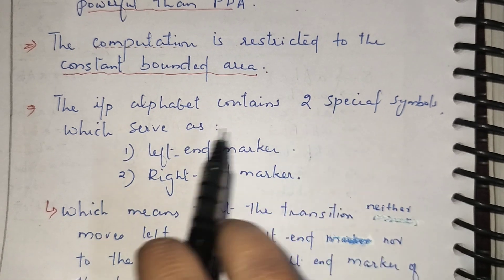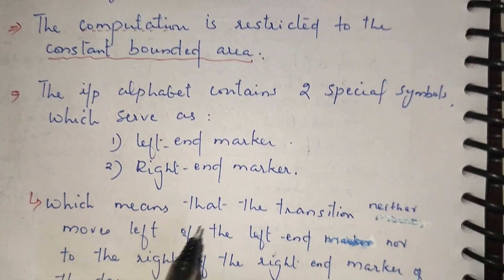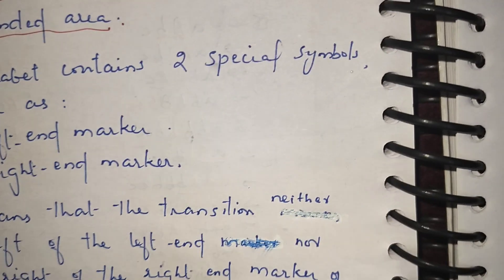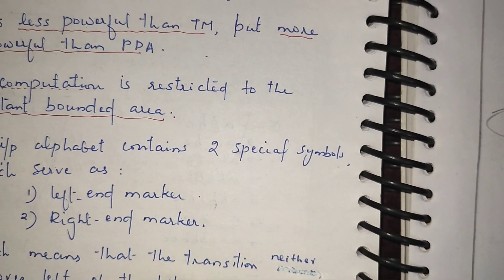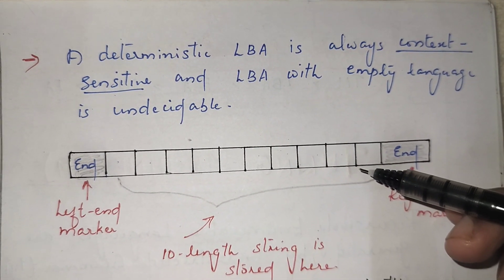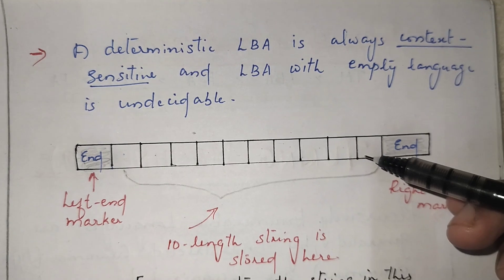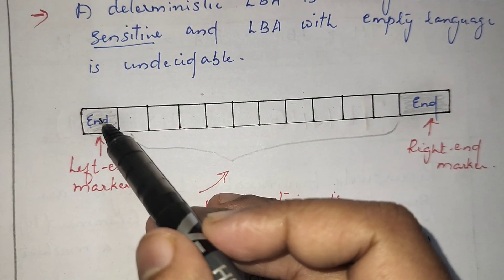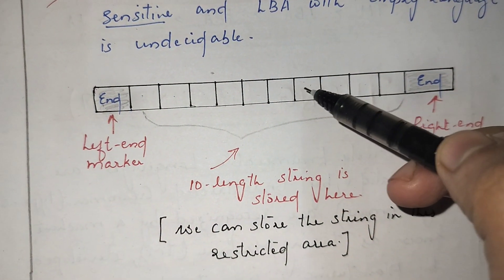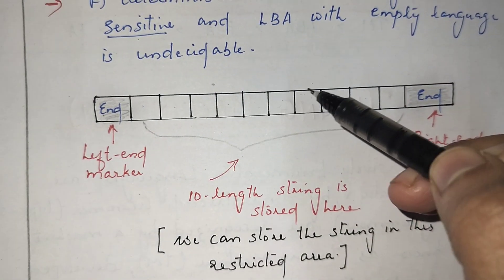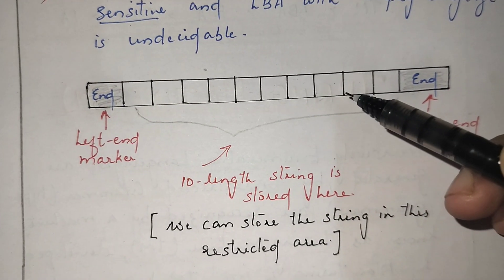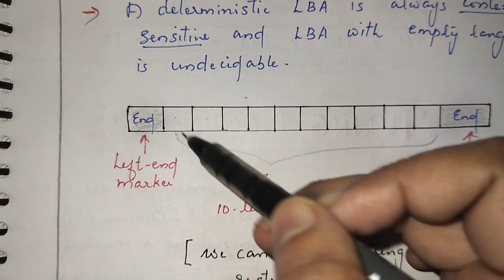The input alphabet contains two special symbols which serve as left and right end markers, meaning the transition can neither move left past the left end marker nor right past the right end marker on the tape. A deterministic linear bounded automata is always context sensitive, and linear bounded automata with empty languages is undecidable. Here in the tape, you can see 10 spaces — 10 locations — so a 10-length string can be stored. This is the tape we use for linear bounded automata, and this area is bounded.